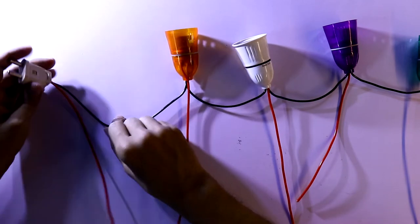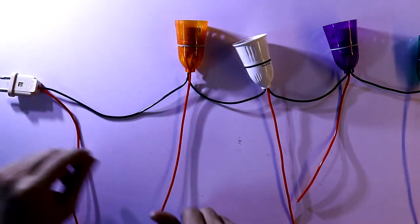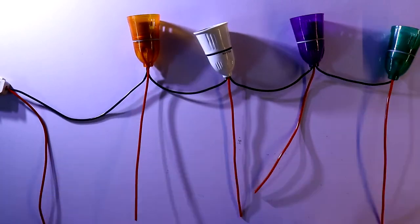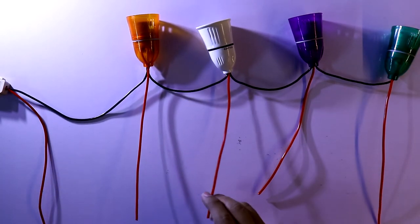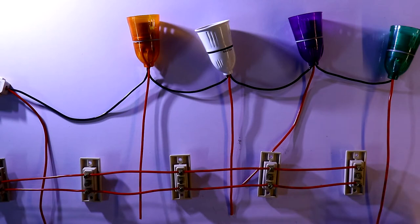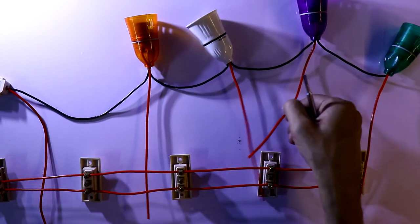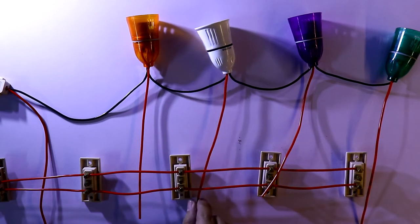And it is two-pin plug, and now I'll connect all the line to the middle pin of the two-way switch. Here this is the middle pin, so the line of bulb will be connected to the middle pin of the two-way switch. So this is how I have connected.